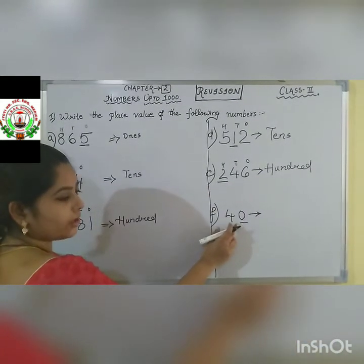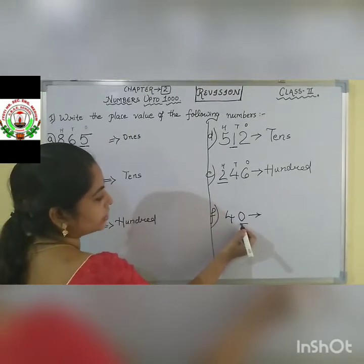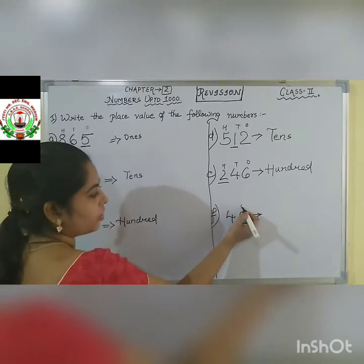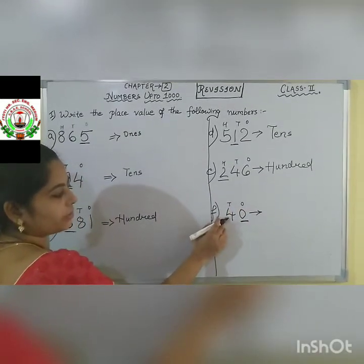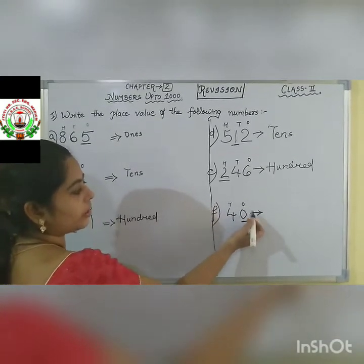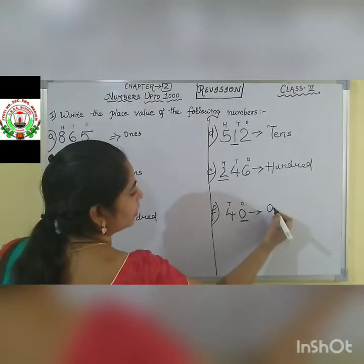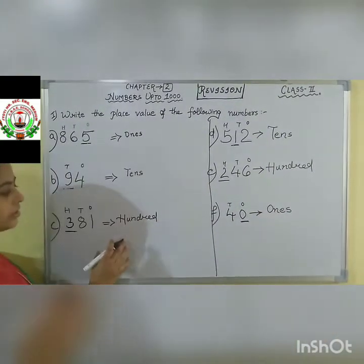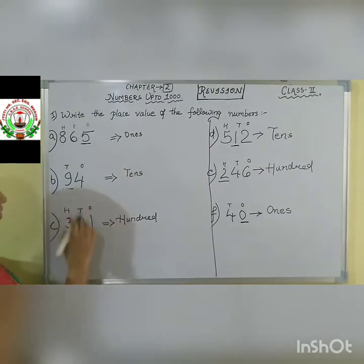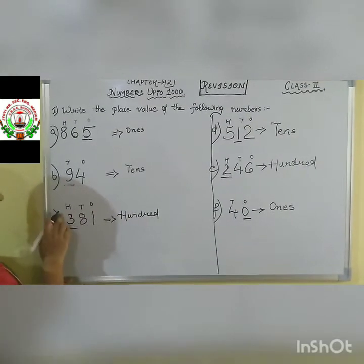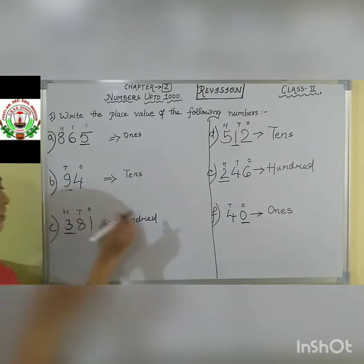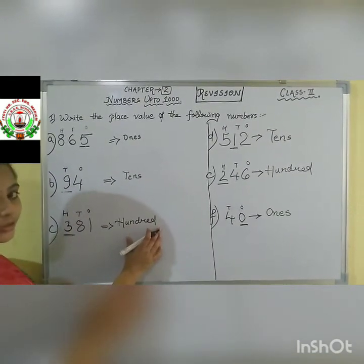Next question: 40. Our digit we have to find the place value of 0. 0 comes under 1's place, and the 10's place has 4. So we are asked about 0. 0 is coming under which place? 1's place. So we will write down as 1's. This is the way you have to do place value questions. See which digit is underlined, give that place value of the numbers, find out under which column it is coming, then write down the correct place value.